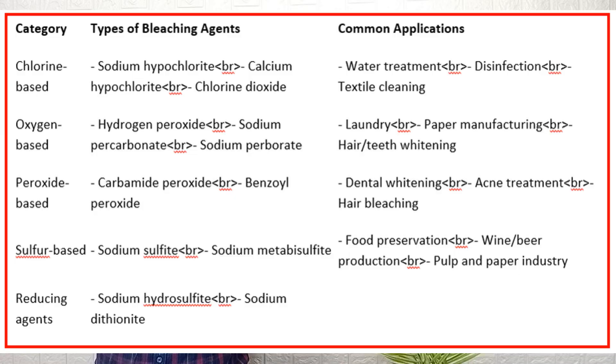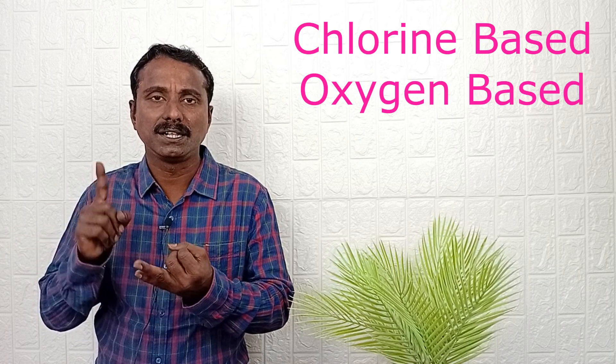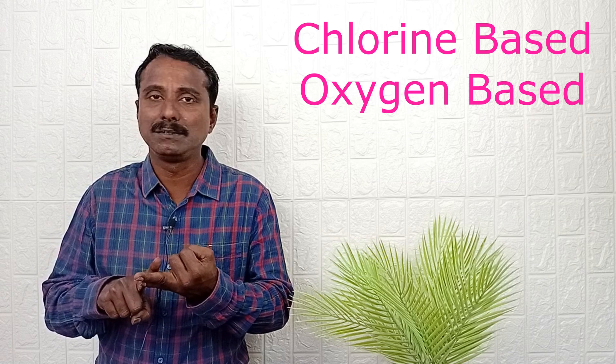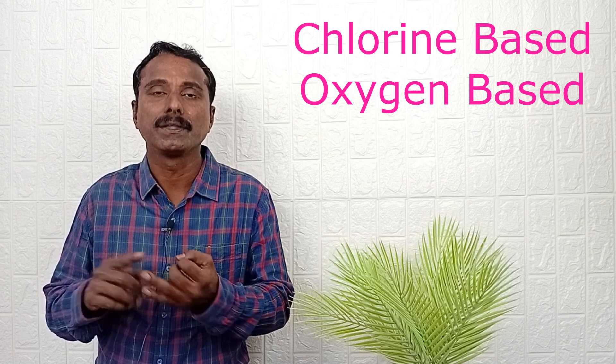In bleaching material, many types are possible. In non-line hydrogen formulation, at least two bleaching materials are common. One is chlorine-based bleaching material, another one is oxygen-based bleaching material.